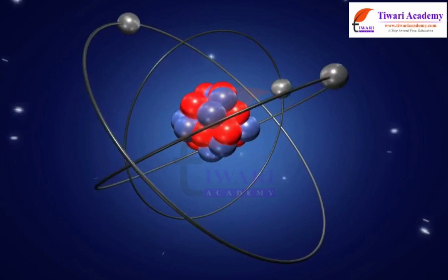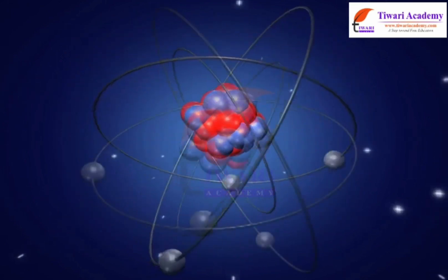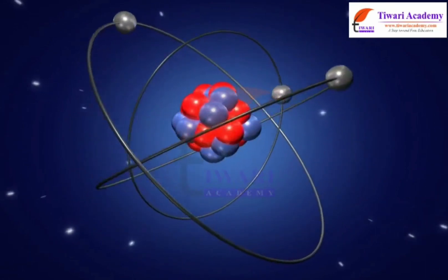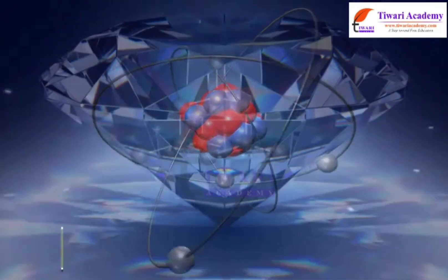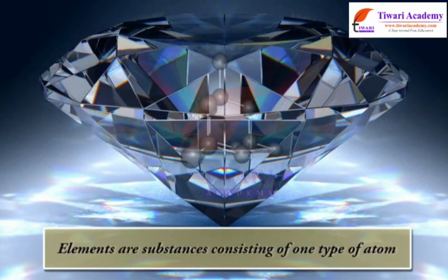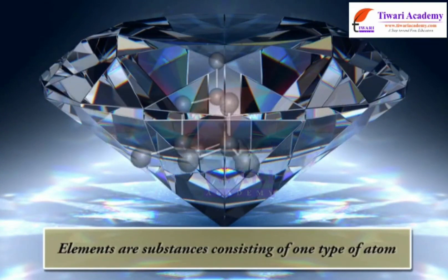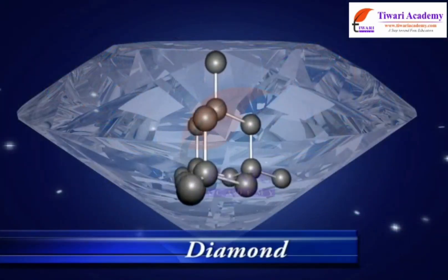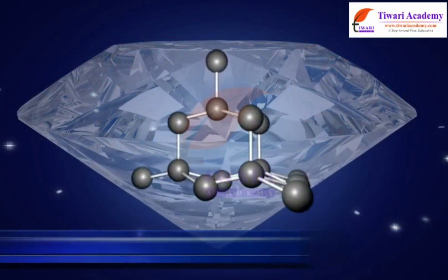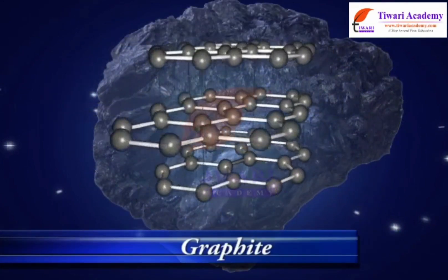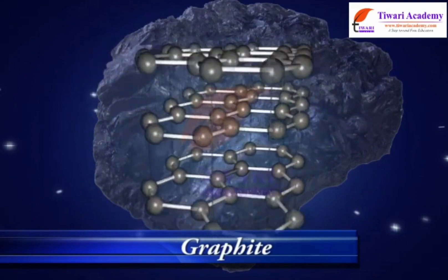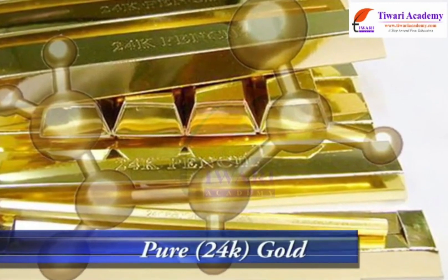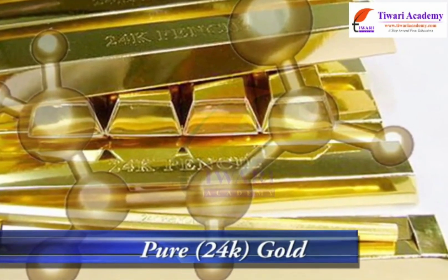All matter is composed of basic elements that cannot be broken down to substances with different chemical or physical properties. Elements are substances consisting of one type of atom. For example, carbon atoms make up diamond and also graphite. Pure 24-karat gold is composed of only one type of atom — gold atoms.